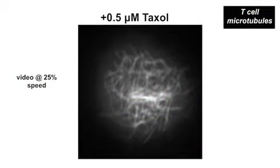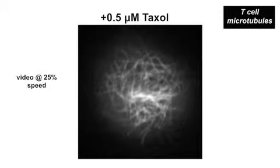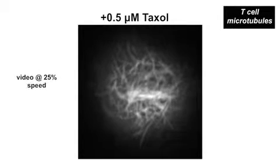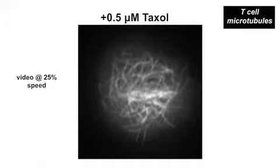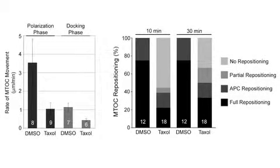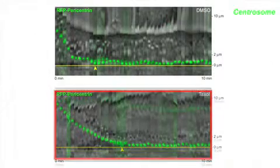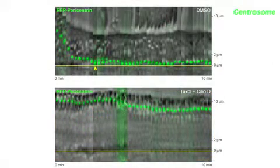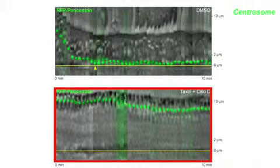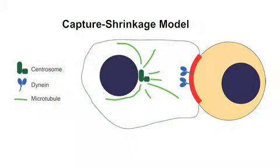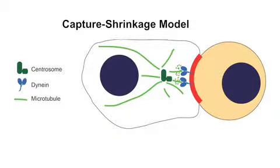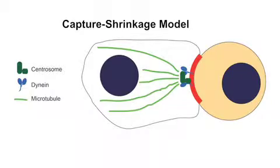To inhibit microtubule depolymerization, the researchers used an intermediate concentration of taxol that stabilized microtubules without inducing filament bundling. The process was again slowed greatly and the overall efficiency of centrosome repositioning was greatly reduced — it does come over, but very slowly. When dynein was simultaneously inhibited with ciliobrevin and microtubule depolymerization with taxol, there was a complete and total block in centrosome repositioning, confirming that this process is dynein-dependent and microtubule depolymerization-dependent, consistent with the end-on capture-shrinkage mechanism.